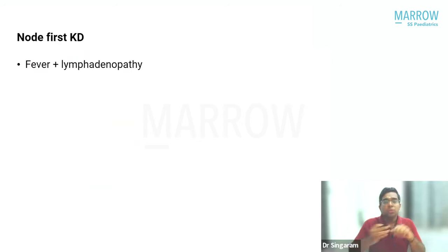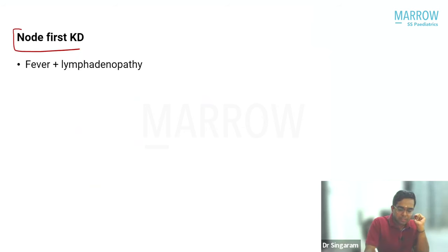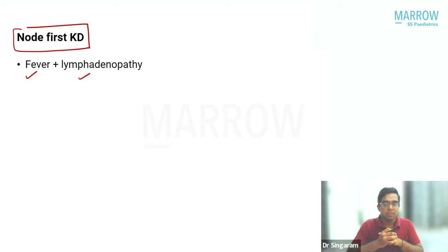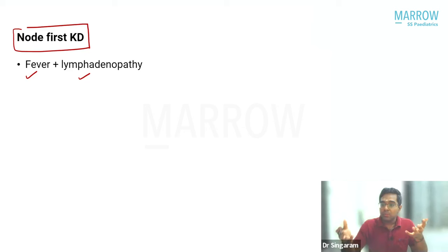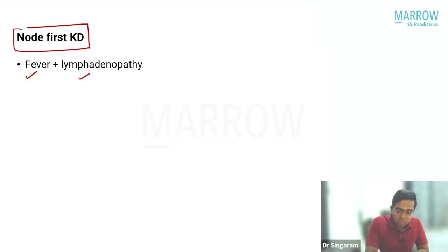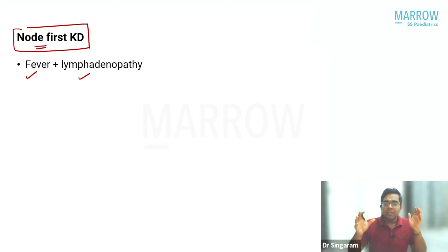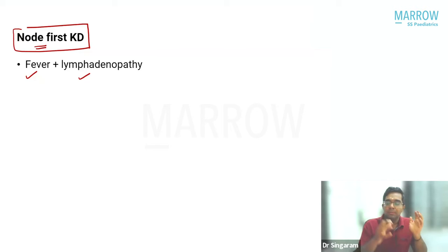There is also a variant called node-first Kawasaki disease, where children present with fever and lymphadenopathy alone initially. Most will think it is an infection, but the fever will not respond to usual antibiotics, and as days go by, other manifestations of Kawasaki disease will start appearing.